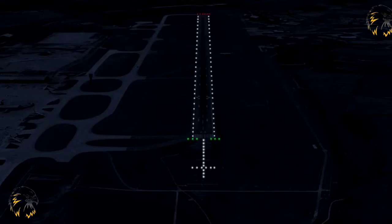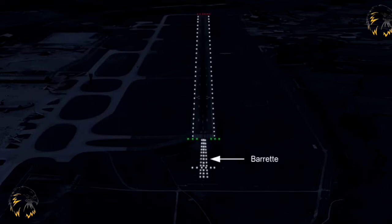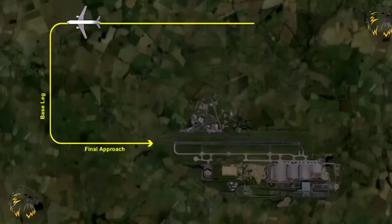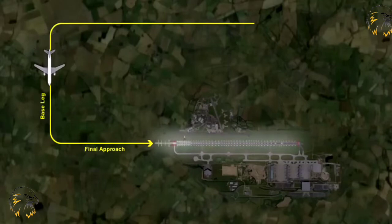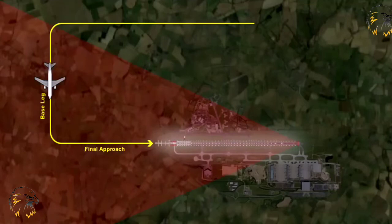An example is shown here. The lights in this system are fixed and normally coloured white. Each centreline light shall consist of either a single source light or a barrette of at least 3 metres in length. On a non-instrument runway, the lights should show at all angles in azimuth for a pilot on base leg and final approach. The intensity of the lights should be adequate for all conditions of visibility and ambient light.